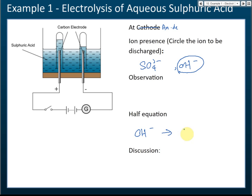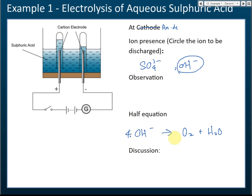When hydroxide is discharged, it forms oxygen and water — not OH, as some students incorrectly write. The half equation is: 4OH⁻ → O₂ + 2H₂O + 4e⁻. You need to memorize this one because it's more complicated than other half equations. The products are oxygen and water.